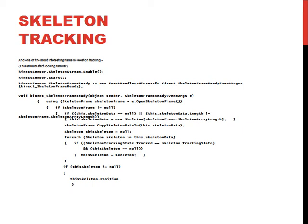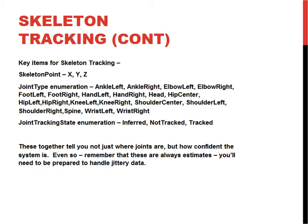Everybody likes the full joint details. The skeleton point itself is an X, Y, and Z coordinate relative to the camera. Z is how far away, X and Y are position — it's a right-hand coordinate system. The joint type tells you which joint you're looking at. You get a collection of joints back in no guaranteed order, so check which joint it is: ankle left, ankle right, etc. The key point is to check the joint tracking state on each joint — getting them back doesn't mean the Kinect actually knows where they are. You can get 'tracked,' 'not tracked,' or 'inferred.' Inferred is where it estimates — like if your hand is behind your back, it infers from where the other arm joints are.